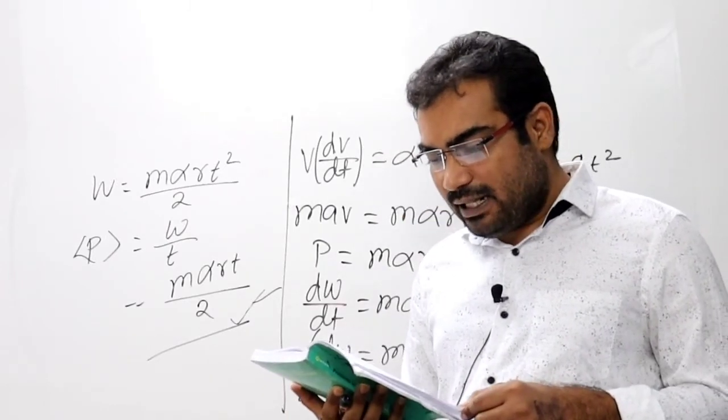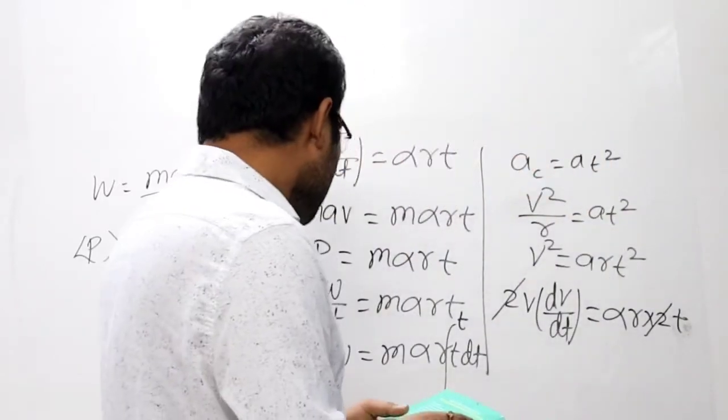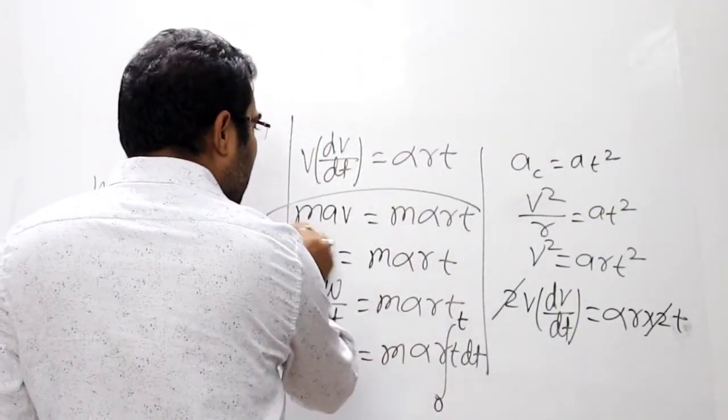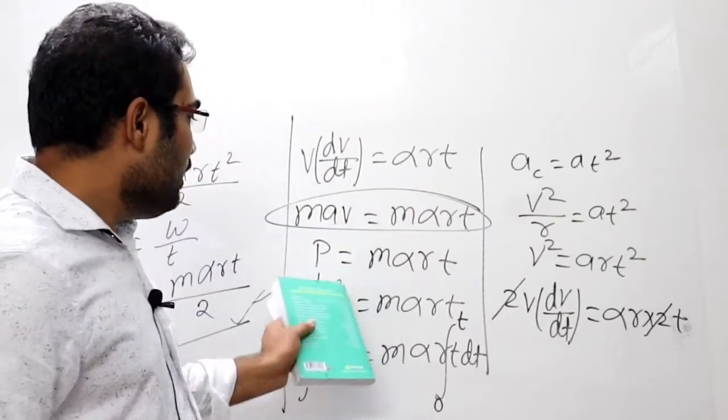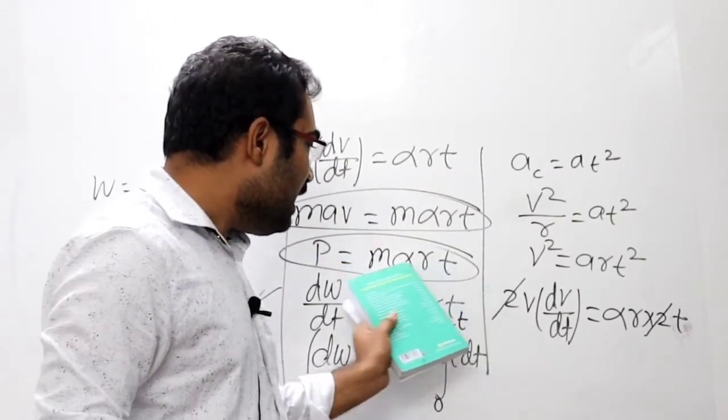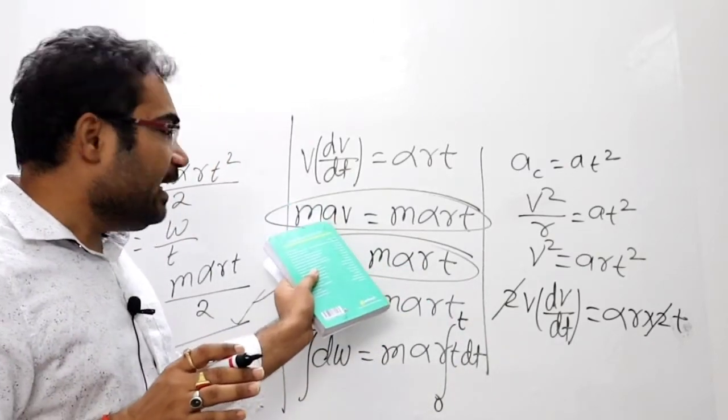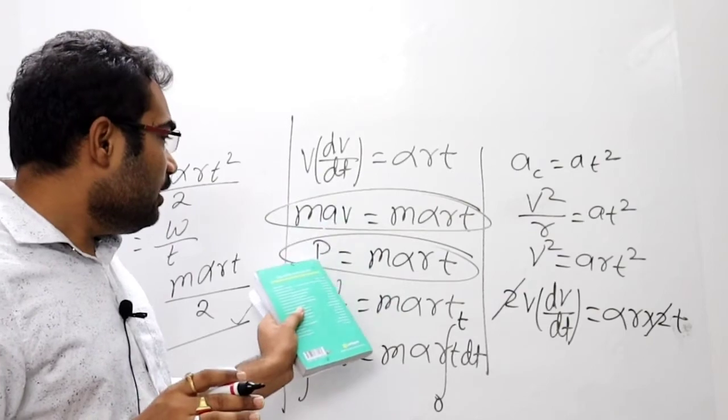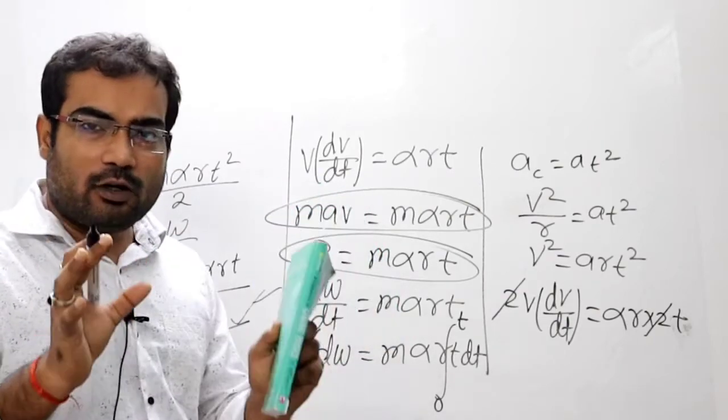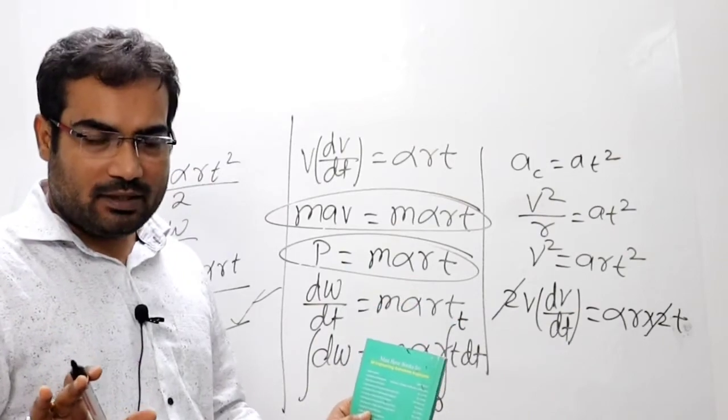Find the time dependence of the power developed by all the forces acting on the particle. Toh all the forces acting on the particle ka answer yeh aa jayega. Thik hai, yeh jo power M alpha R T - iske first part ka answer yeh aa gaya: M alpha R T. Thik hai, kyunki M A net force ho gaya into velocity. Toh yeh jo hai net force ke dwara jo power developed: M alpha R T, yeh calculated.